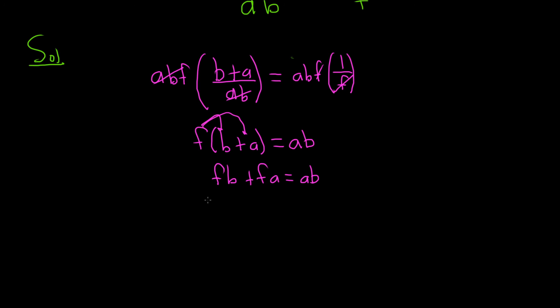So let's go ahead and subtract this fb from both sides. So minus fb minus fb. So we have fa equals ab minus fb.